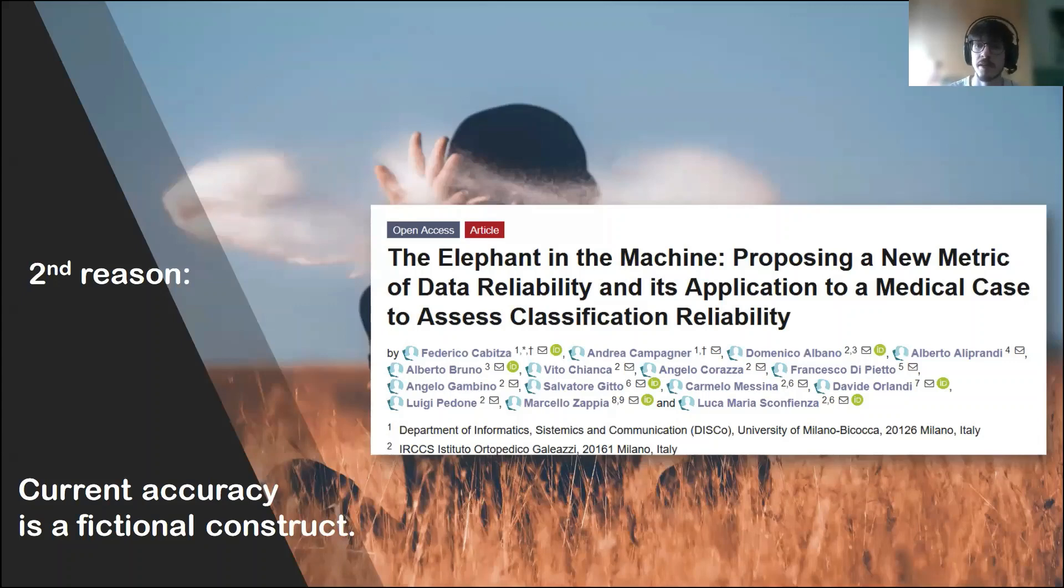For example, these kind of metrics are usually based on checking whether the decision provided by artificial intelligence systems are equal to a given set of annotations. The problem is that it is not always clear how these annotations are collected and if they can be considered accurate or correct, because there could be phenomena like inter-rater disagreement, that is very common in medical settings. Also, these kind of annotations do not take into consideration the different perception of decision makers. For example, it could be that a wrong decision in a given case is less impactful than a wrong decision on another case.